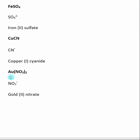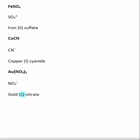The last example: the element to the left is gold, which is a transition metal. Looking at the negatively charged species, I see nitrate, NO₃⁻, where every nitrate has a negative one charge. But there are two nitrates, so the total negative charge is minus two. That means gold must have a plus two charge for the compound to be neutral. The name is gold(II) nitrate.